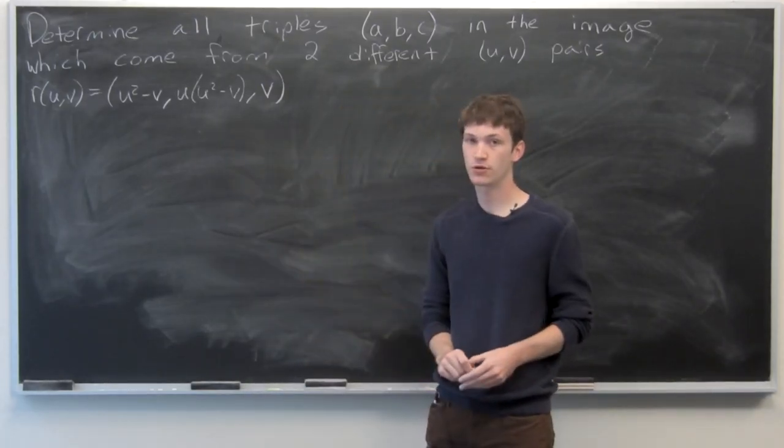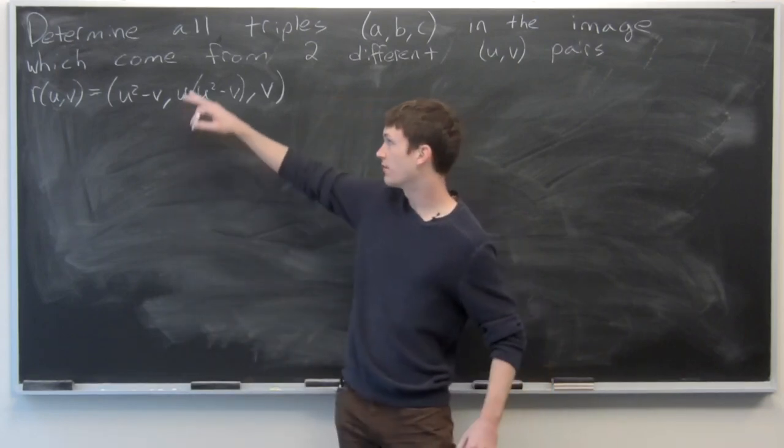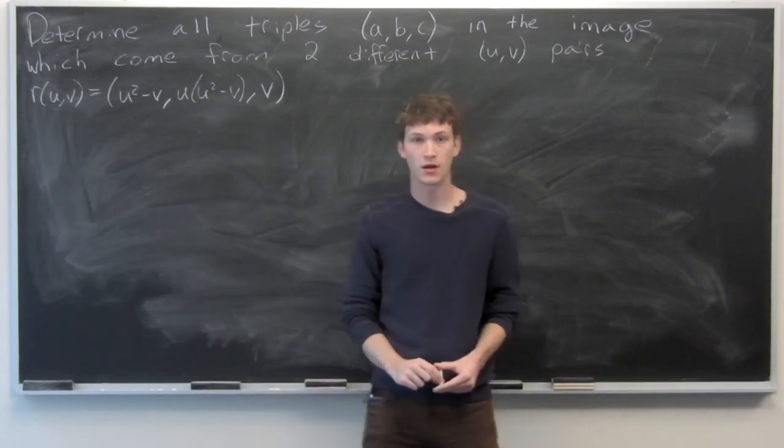In this problem, we're asked to determine all triples ABC in the image which come from two different u-v pairs.